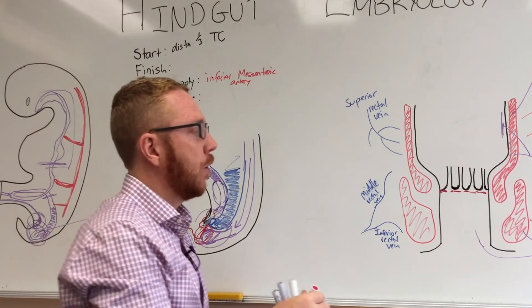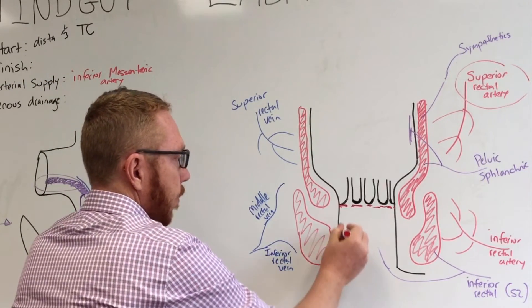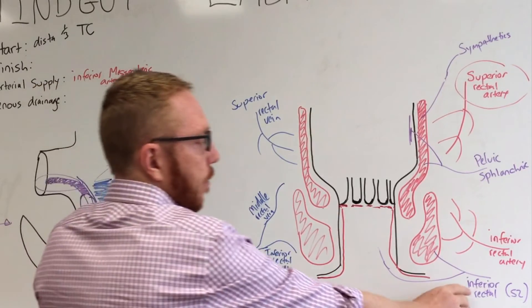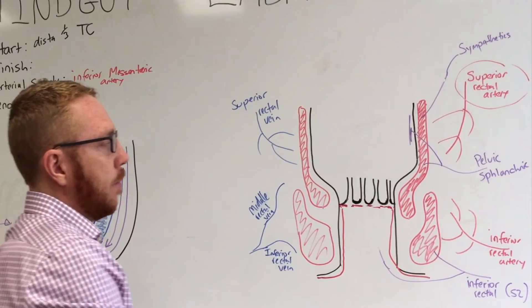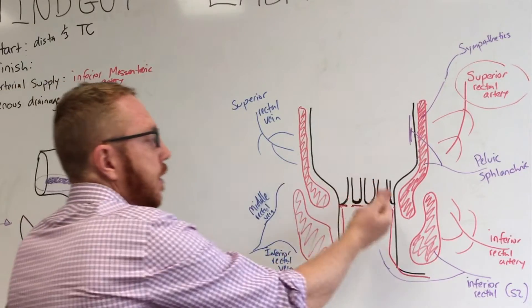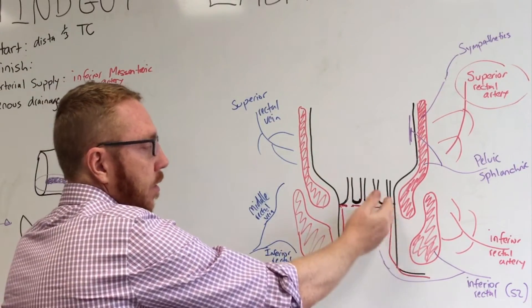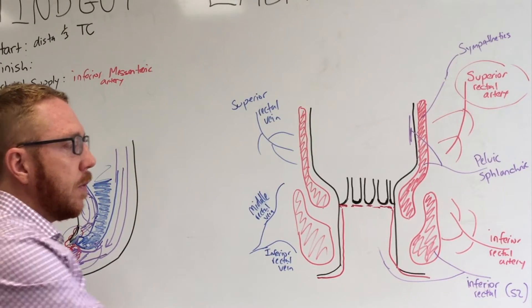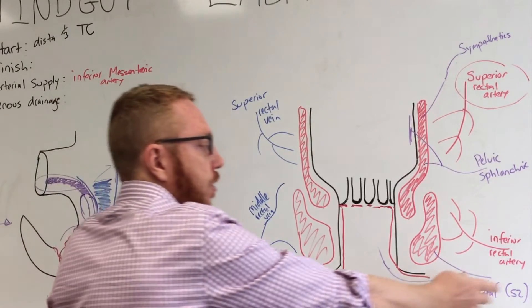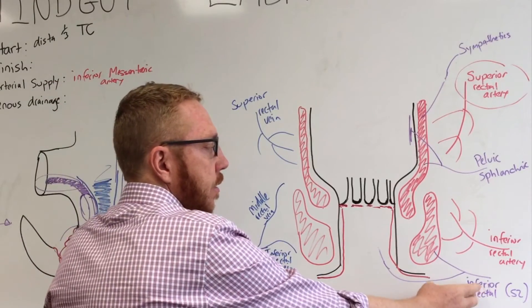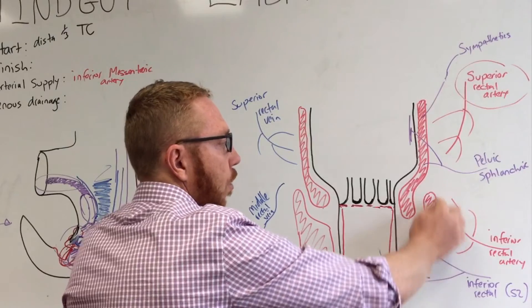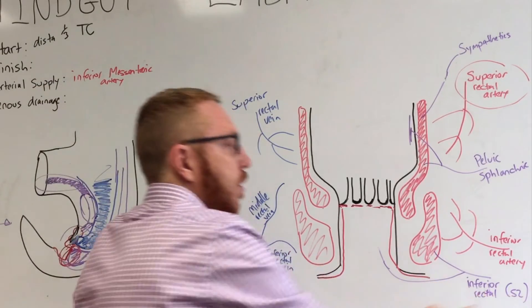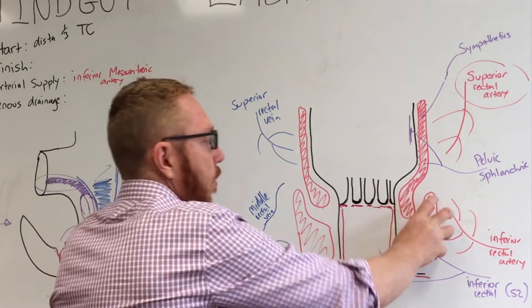Below the pectinate line, the tissue is ectodermal and the epithelium is stratified squamous. The nerve supply here comes from the inferior rectal nerve, a branch of the pudendal nerve (S2–S4). Because it has somatic innervation, this area can feel temperature, touch, and pain. This somatic supply also controls the external anal sphincter, which provides voluntary control — hence the mnemonic: S2, S3, S4 keeps poo off the floor.